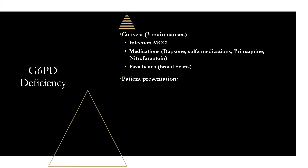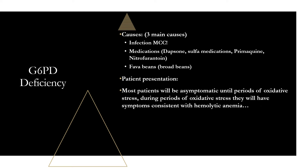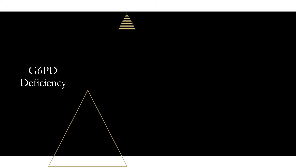As far as how patients present: if they're not going through an episode, they will be asymptomatic most of the time. During hemolytic anemia, they'll have jaundice from bilirubin buildup, dark urine from intravascular hemolysis flushed through the urine, splenomegaly as the spleen clears damaged red blood cells, and back pain because the kidneys filter broken-down red blood cells, which can lead to acute kidney injury and flank pain.